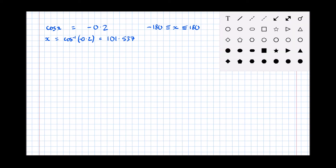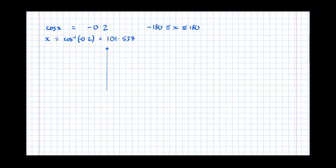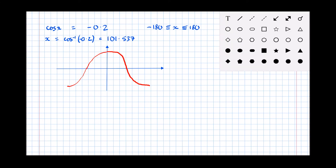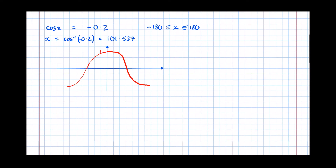Now we need to draw the cosine graph between our two limits, which is minus 180 to 180. Again, the graph doesn't need to be perfect — it just has to be big enough to clearly annotate. The cosine graph starts at 1, crosses zero at 90 and minus 90, and reaches minus 1 at 180 and minus 180. We draw a horizontal line at minus 0.2, which sits just below zero.